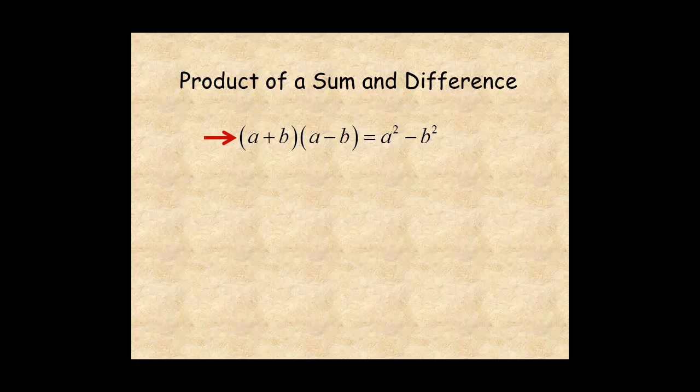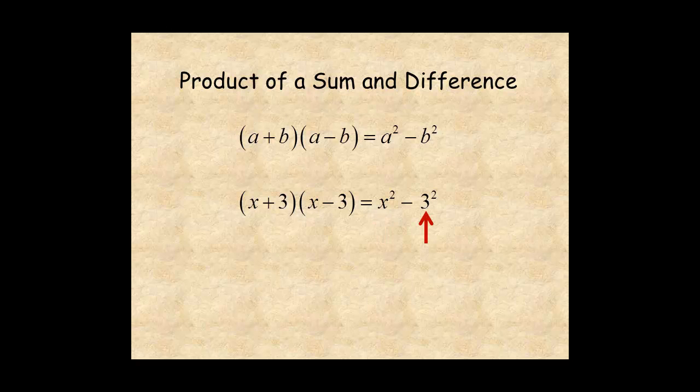For example, the product of x plus 3 and x minus 3 is x squared minus 3 squared, which is x squared minus 9.